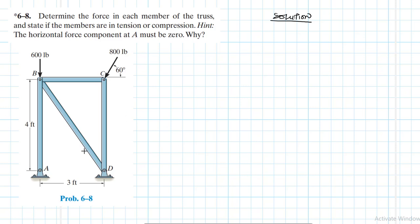For a problem like this, there is no need to work out support reactions first. We can go directly to solving the problem using the joint method, which we can apply when the number of unknowns at a given joint are two or less.